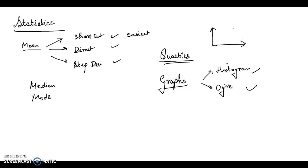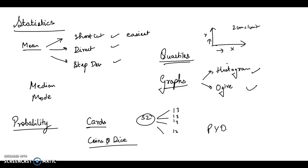Now probability, card questions are the most important. 52 cards are divided into 13, 13, 13, 13, where you will get hearts, diamonds, spades, and clubs. They may ask you the probability of black cards or black queens and so on. You should be prepared for everything. Then coins and dice questions must be practiced. Previous year questions, have a look, practice from sample papers.